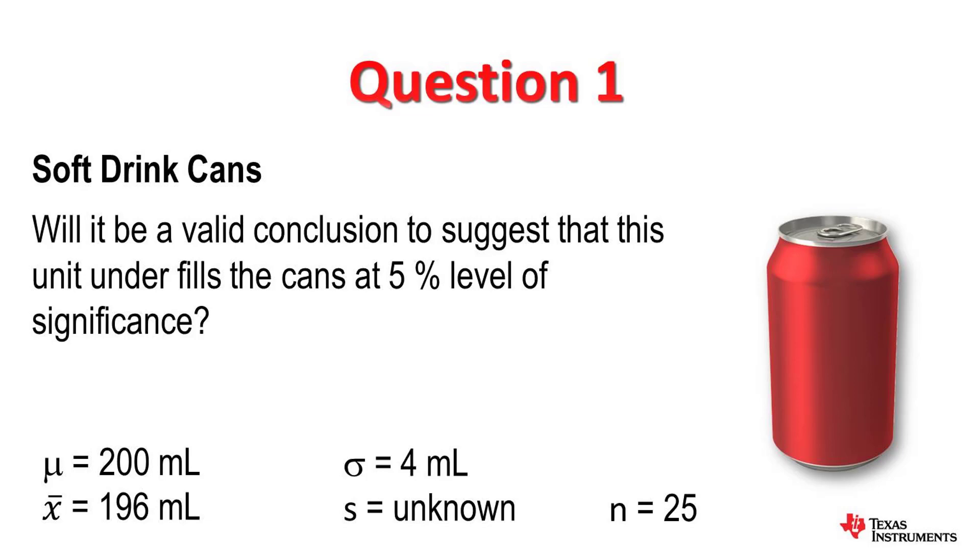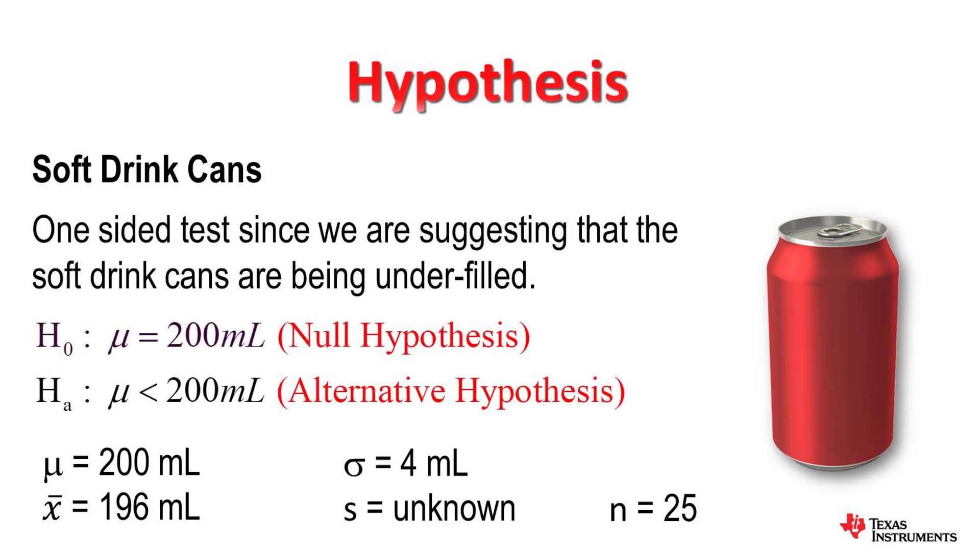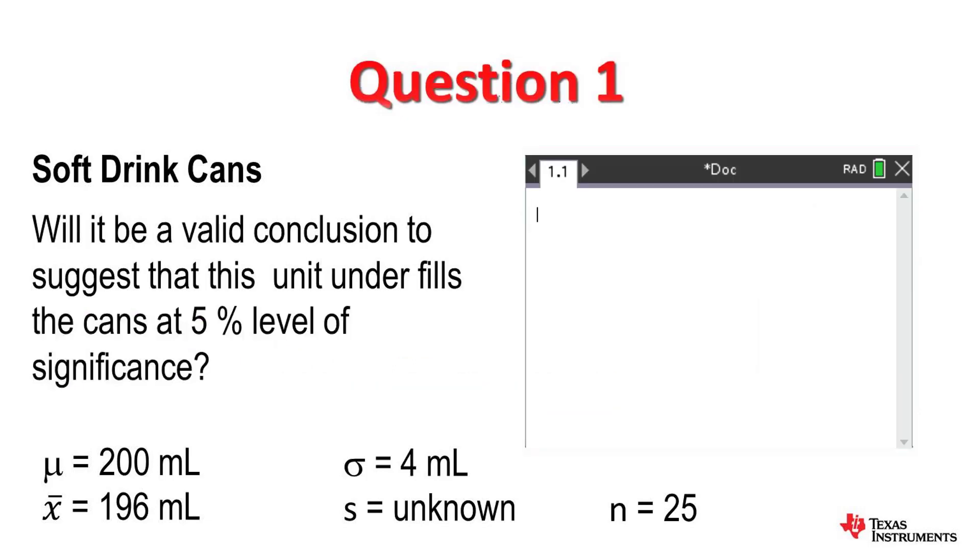Before we proceed, we first need to set up a hypothesis. We are investigating underfilling, so it is a one-sided test. The null hypothesis says that the average volume a can holds is exactly 200mL, whereas the alternative hypothesis says that the can actually holds less than 200mL. In our case, it is 196mL that we are looking at.